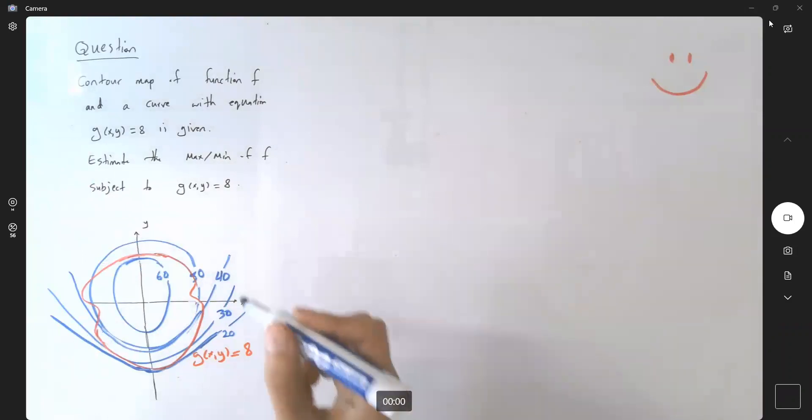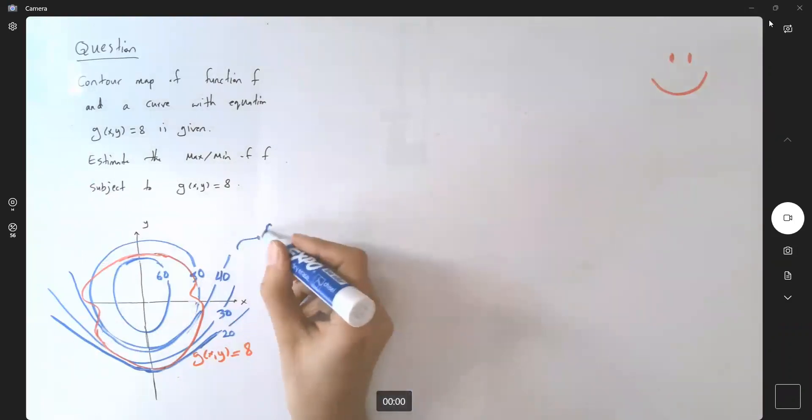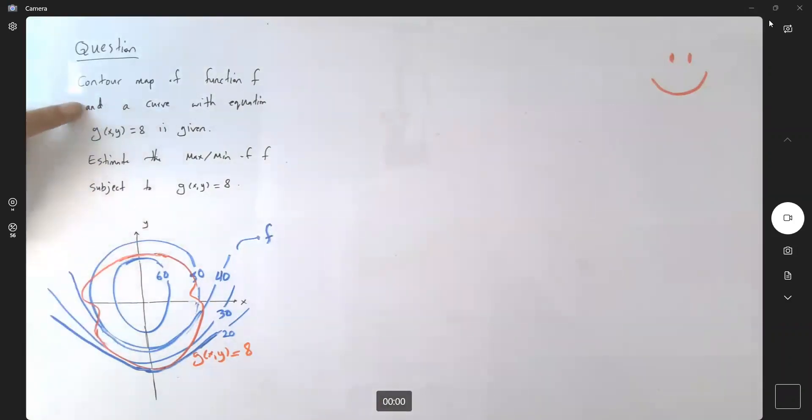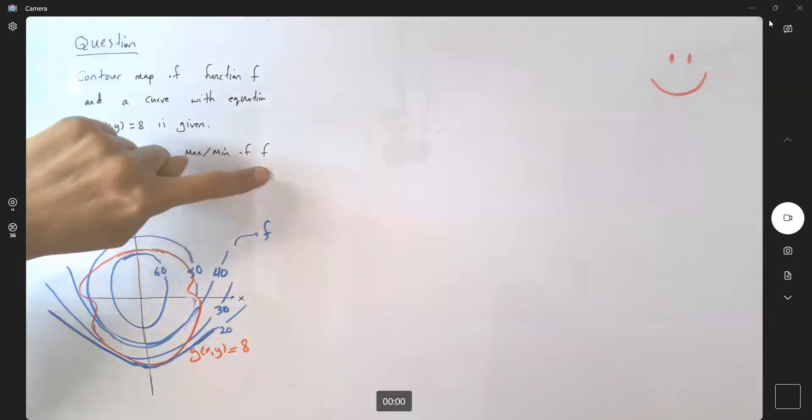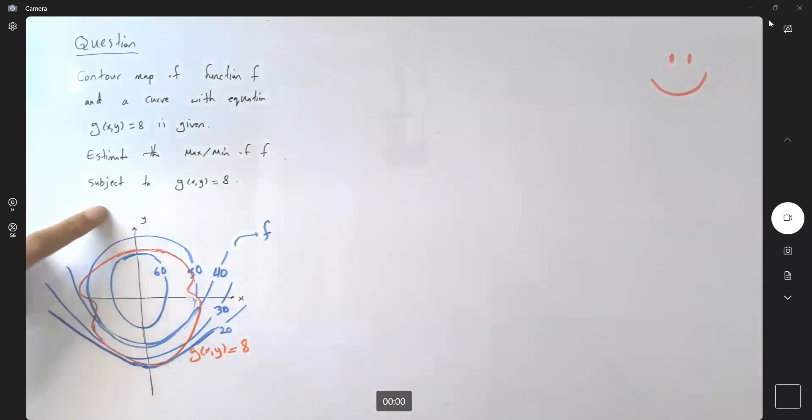So let's write this down, contour maps for function f, and you have a curve with equation g of x and y equals to 8, which is given to you with the red curve here. The question says, estimate the maximum and minimum of function f, subject to this red curve.